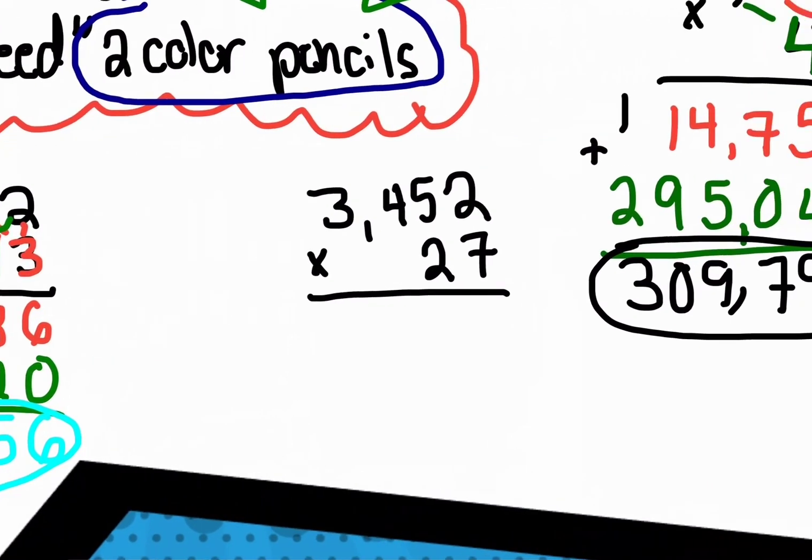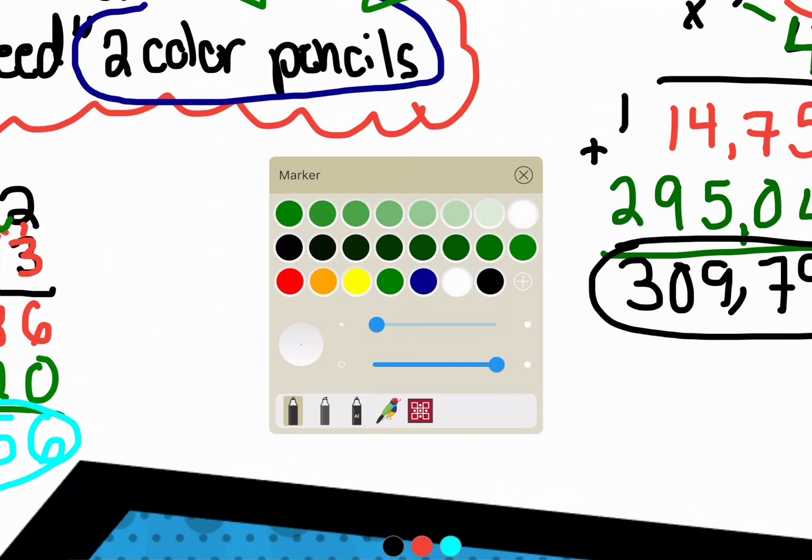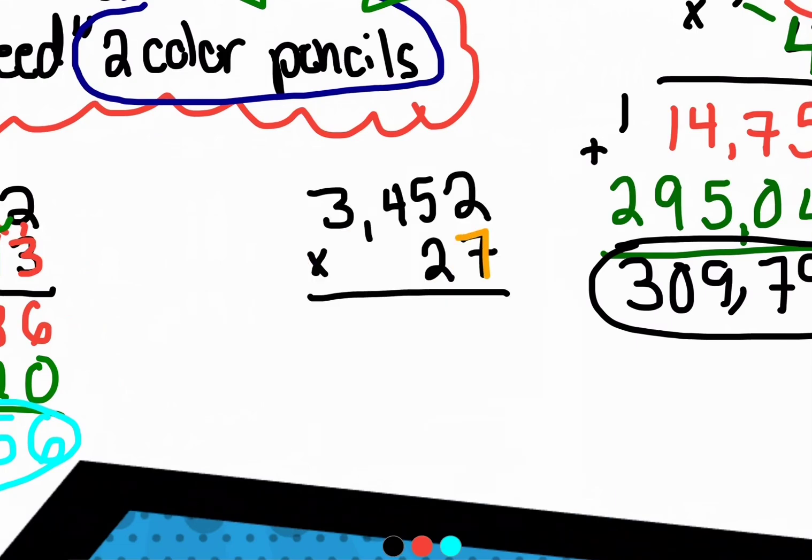See what you get and then come back to me and see if you got it right. Now that you're back, I'm assuming that you worked it out. I'm going to choose different colors this time. I'm going to choose orange for my ones. Remember you're multiplying everything in orange now to everything up top.